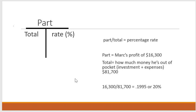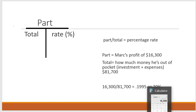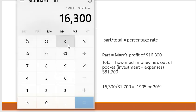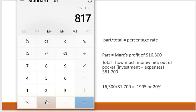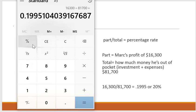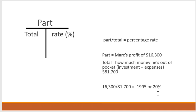In this problem with Mark, we have our part and our total. Our part is Mark's profit of $16,300. The total is how much money he's spent out of pocket — his investment plus expenses of $81,700. So we take $16,300 and divide it by $81,700, which equals approximately 0.1995. When we round up and move that decimal over two spots to the right and add a percentage sign, Mark's profit is going to be 20%.